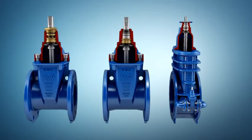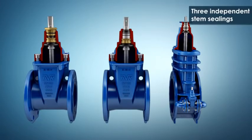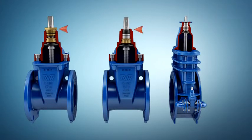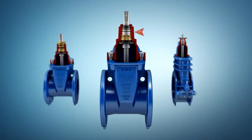AVK offers three independent sealings. A wiper ring seals against impurities from outside. NBR O-rings provide tightness around the stem. A rubber manchet or O-ring is the main sealing against the flow. The polyamide bearing prevents corrosion.